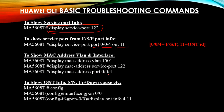Use 'display mac-address port 0/0/4' to see all uplink port MAC addresses coming from different ONTs and different VLANs — everything on that uplink port's MAC address table.